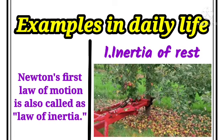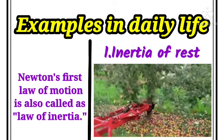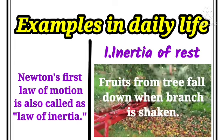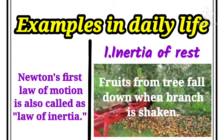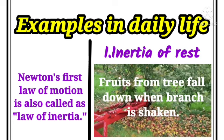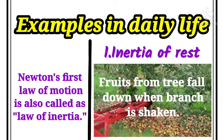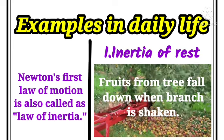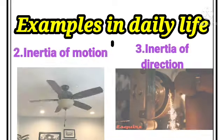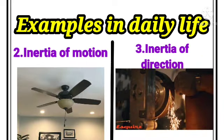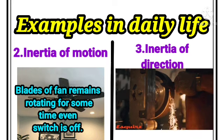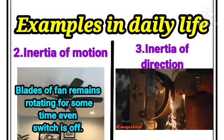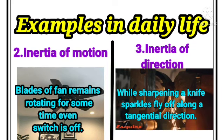Examples in daily life. Newton's First Law of Motion is also called the Law of Inertia. Inertia of rest — example: fruits from a tree fall down when branches are shaken. Inertia of motion — example: blades of a fan remain rotating for some time even after the switch is off.